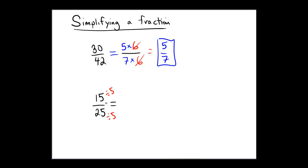The 15 divided by 5 yields 3, and 25 divided by 5 yields 5, so the answer for this one is 3 over 5 or 3 fifths.